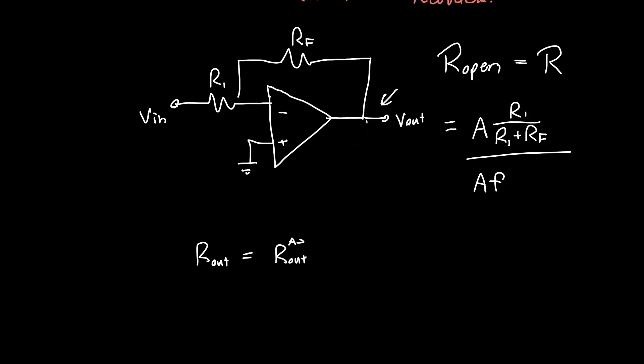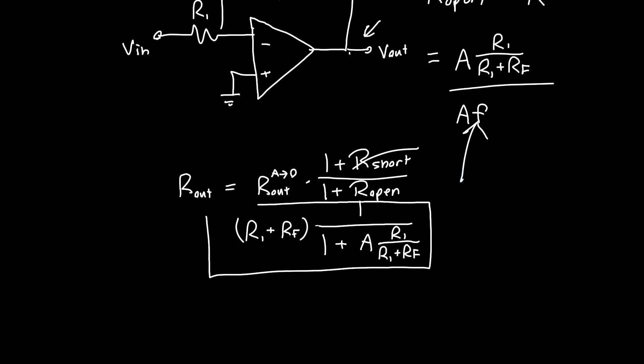And so we can plug these all into our original equation for Rout. It's equal to Rout with the gain set to zero, which we said was R1 plus RF, multiplied by one plus the return ratio with the port shorted. And this is just zero, so we've just got one on the top divided by one plus the return ratio with the port open, which we said was just equal to one over one plus A R1 over R1 plus RF. And so this is our answer. And we didn't have to do basically any complicated math. We didn't have to do any KVL. We didn't have to solve a system of linear equations. We were just able to get the output resistance from fairly easy to calculate quantities.